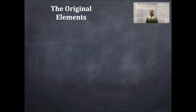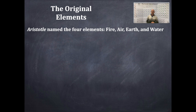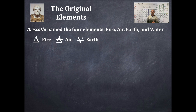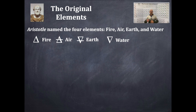The original elements — what are they? Aristotle named four elements. The four elements are fire, air, earth, and water. You should see the similarities between their symbols — they are very similar and opposite.